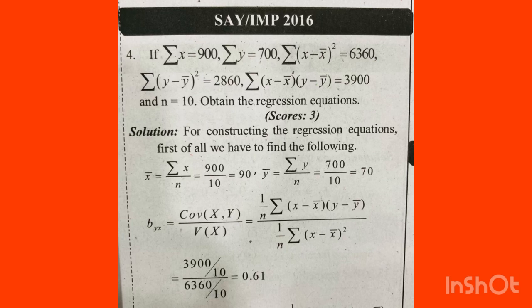If sigma x is equal to 900 and sigma y is equal to 700, and sigma of (x minus x̄) squared is equal to 6360, and sigma of (y minus ȳ) squared is 2860, and sigma of (x minus x̄)(y minus ȳ) is 3900 — we use these values to find the regression equations.